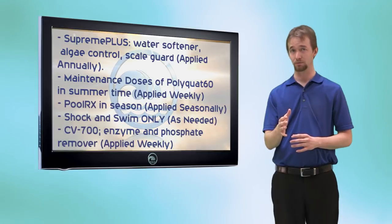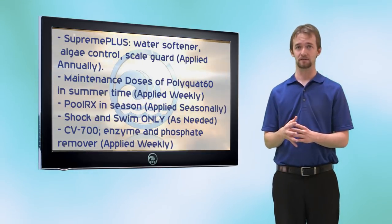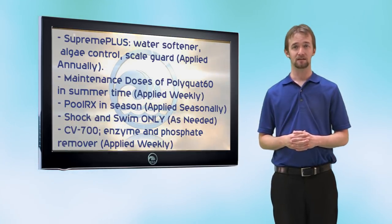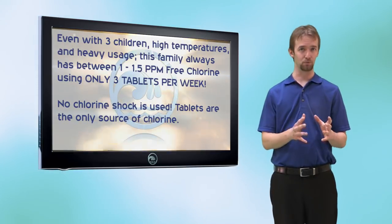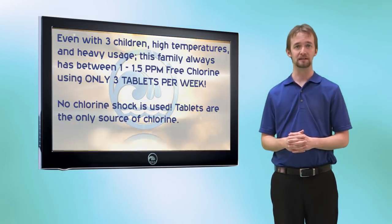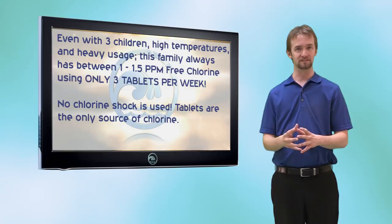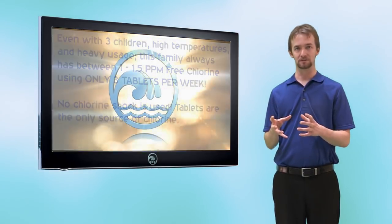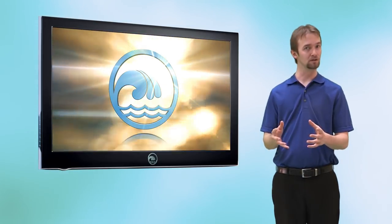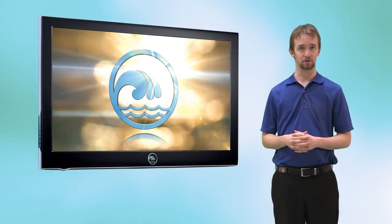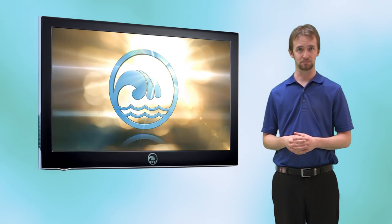They only shock their pool with Shock and Swim — they do not use chlorine shock. The enzyme breaks down all organic contaminants from bather load and rain, and the phosphate remover keeps phosphates gone so algae doesn't have a nutrition source. Every time we test their water during the summer, they hold between 1 and 1.5 ppm free chlorine using only three tablets a week as their only chlorine source. This works because all these alternatives work together to remove contaminants without needing chlorine to do that job — so the chlorine from the tablets can go towards sanitizing and holding chlorine. This concludes the section on chlorine. To continue chemistry school, please see the video for pH. Thank you for choosing riverbendpoolsupply.com.